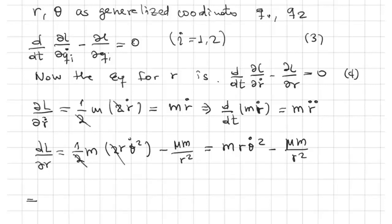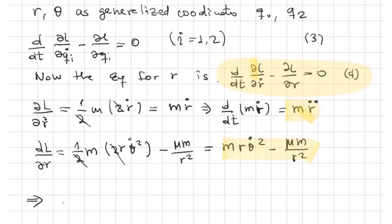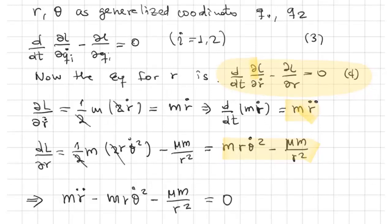Substituting into equation number four, we get the equation of motion for r: m·r̈ − m·r·θ̇² − mu·m/r² = 0. Let's call this equation number five.